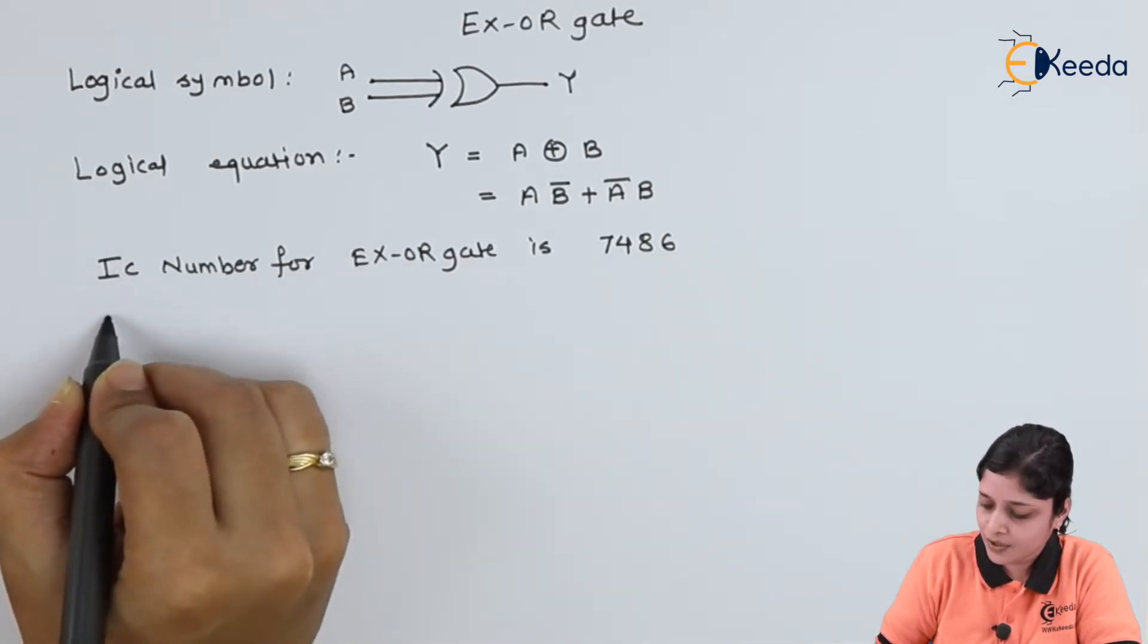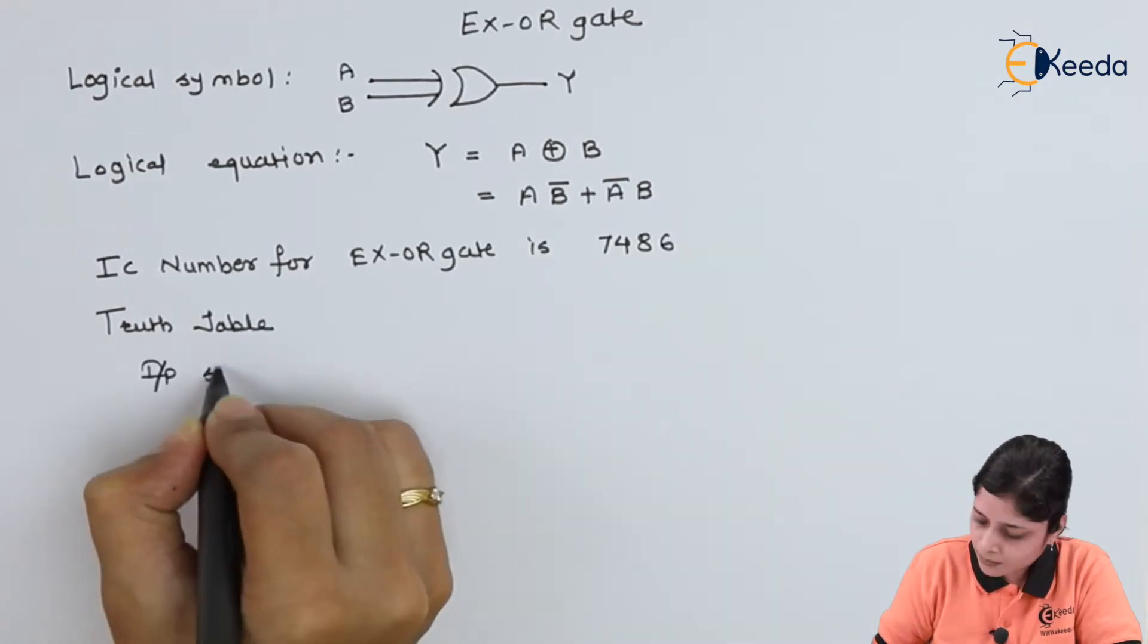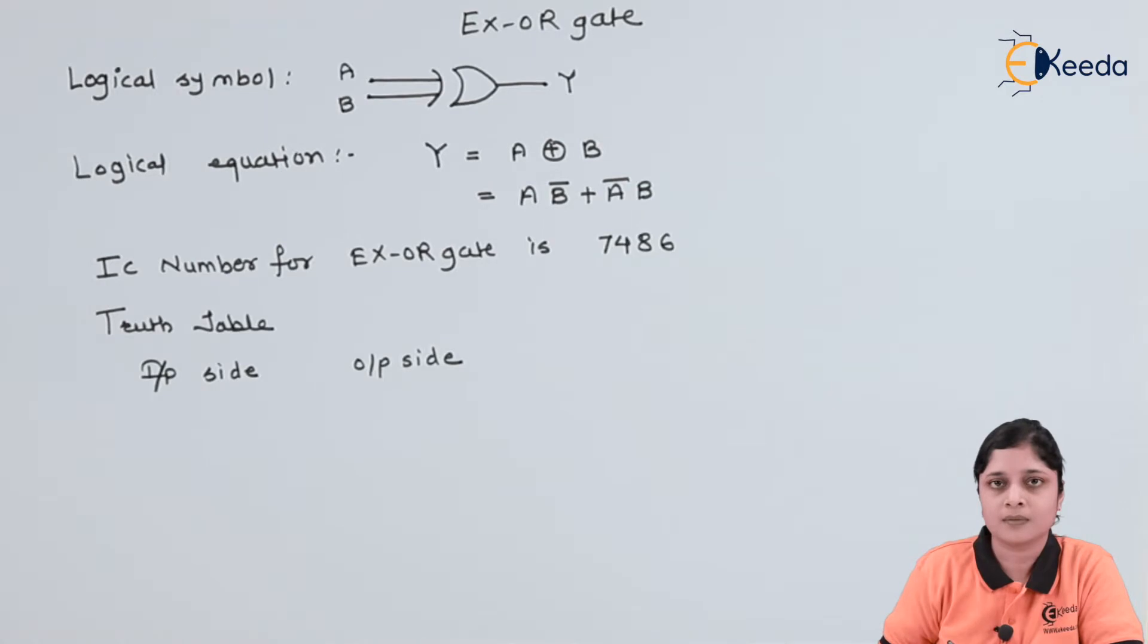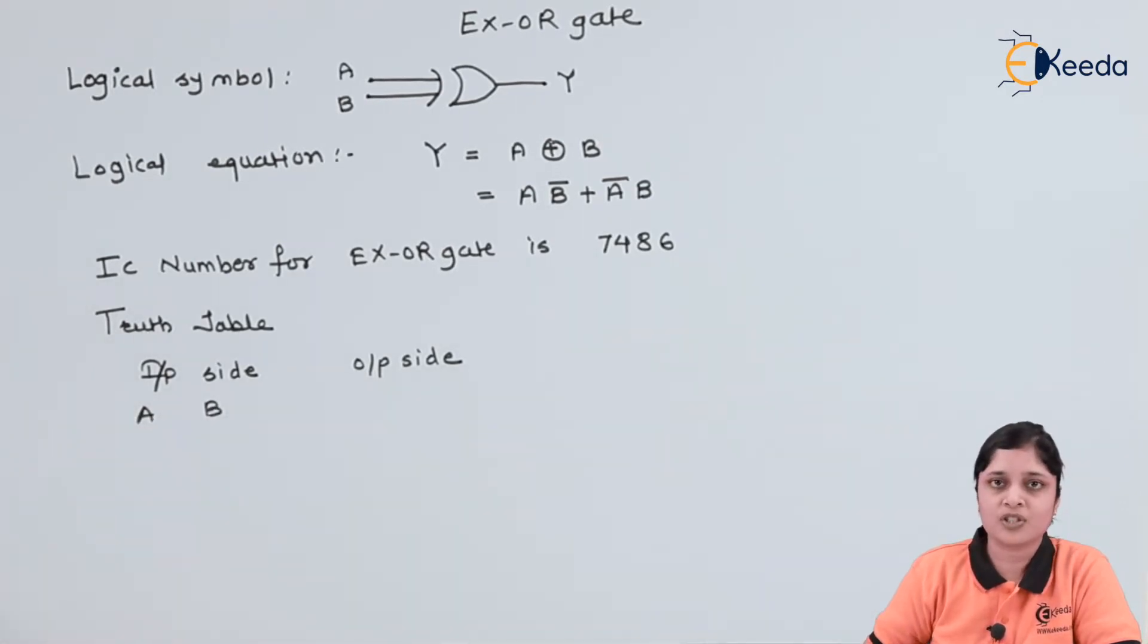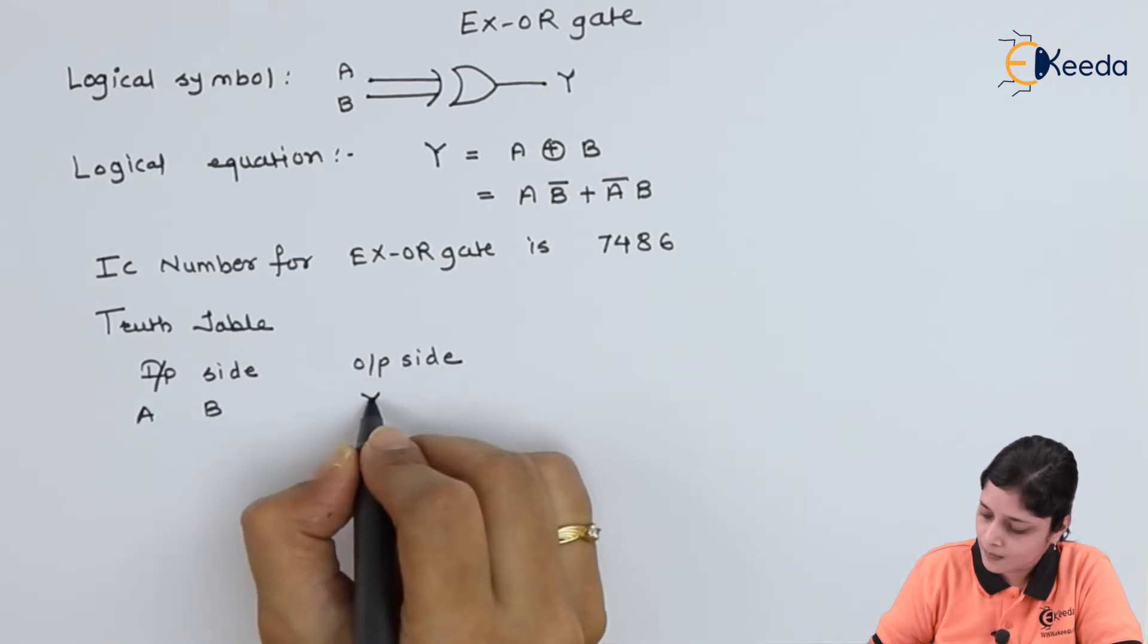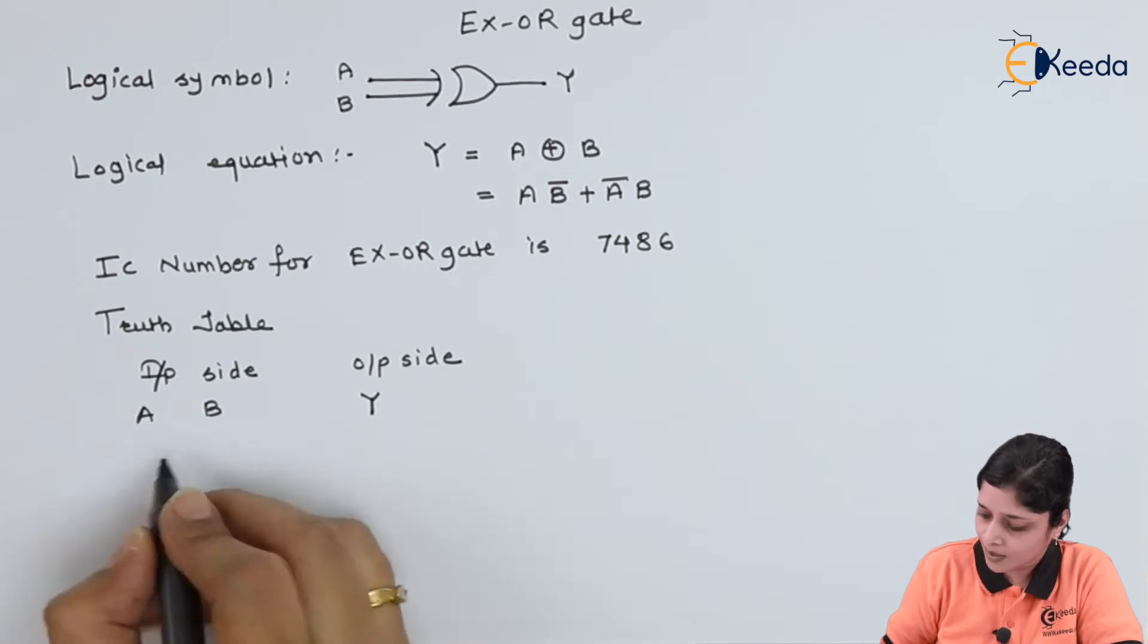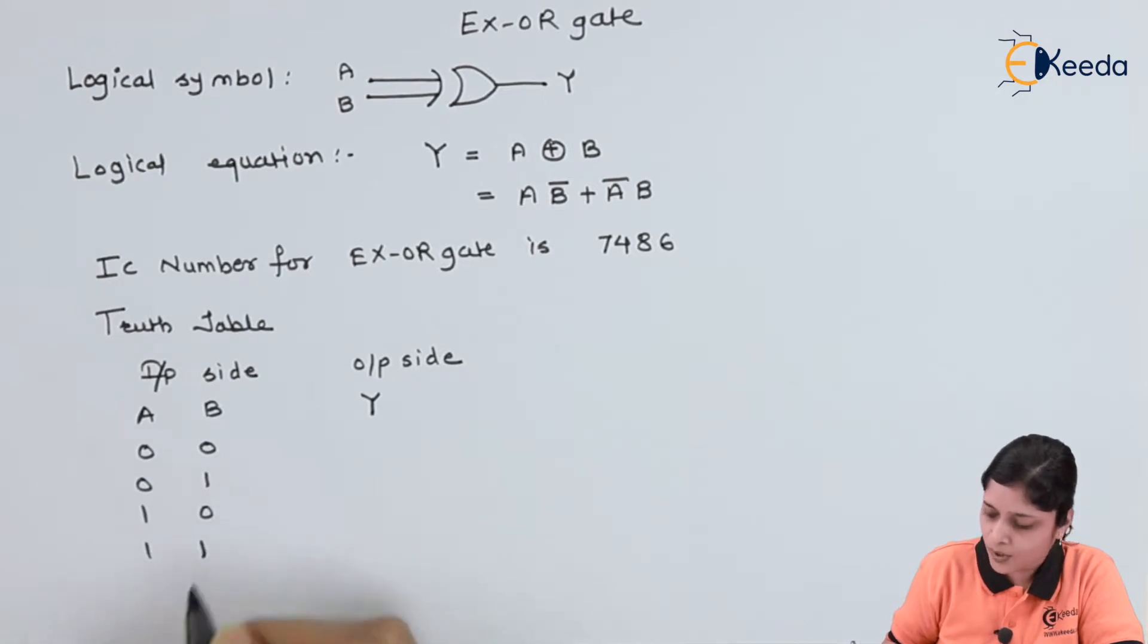Now, we will start with the truth table. Input side. Output side. How many inputs are there? Two inputs A and B. And at the output you will get your final answer. So, possible combinations are 0 0, 0 1, 1 0, 1 1.